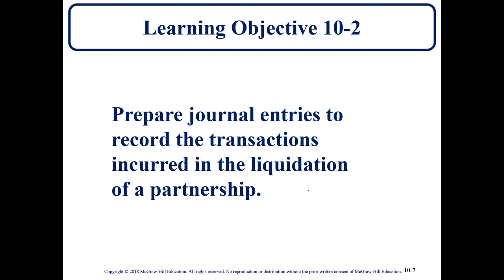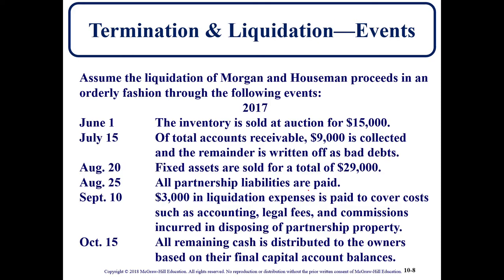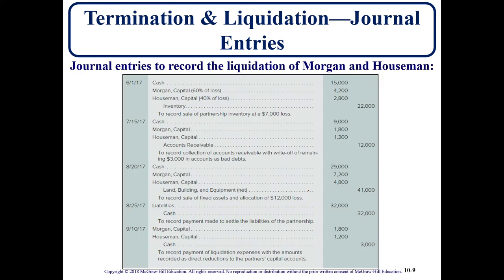How do we prepare the journal entries for the liquidation? On January 1st we sold our inventory, accounts receivable, and fixed assets, paid our liabilities, and also had liquidating expenses — things like legal fees and commissions to real estate agents — with any remaining cash distributed to the partners. Starting with our first entry: inventory was reported on the balance sheet at $22,000 and we sold it for $15,000, which means we sold it at a loss.